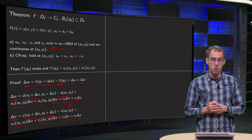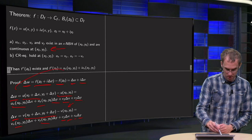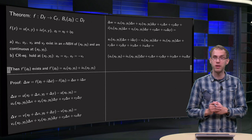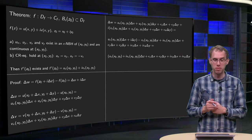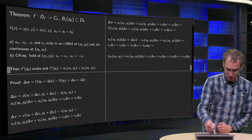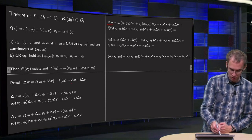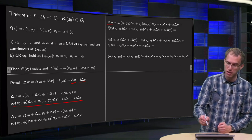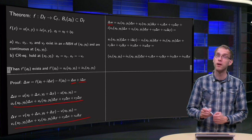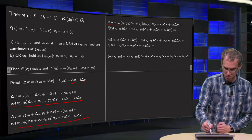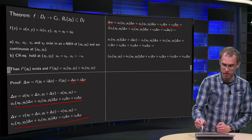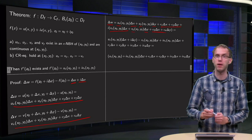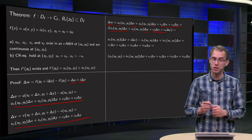Here you are using the first continuity condition for Δu and Δv. Now all you have to do is plug them into the expression for Δw and take the limit to 0, using the Cauchy-Riemann equations. So Δw equals Δu plus i times Δv, and substituting we get: ux·Δx + uy·Δy + remainder, plus i times (vx·Δx + vy·Δy + remainder). Now we can rearrange using Cauchy-Riemann.